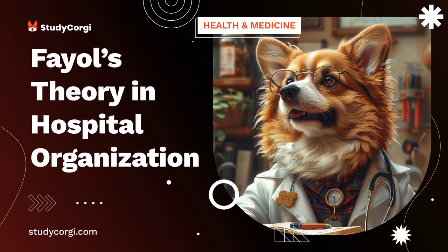Thus, Fayol's theory applies to the work of government agencies and hospitals, in particular to the structure and operation of the Royal Children's Hospital Melbourne. Most of the management principles and functions described by Fayol improve the organization of patient admission and hospital operation. The organization provides a decent workplace for the staff and high-quality service for all customers. Not all principles of the described theory apply to the hospital, but many of them improve the structural performance of the medical facility.